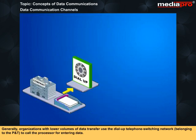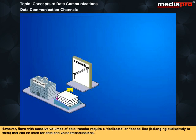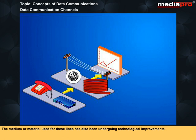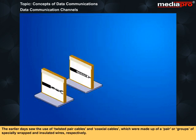Organizations with lower volumes of data transfer use the dial-up telephone switching network to call the processor for entering data. However, firms with massive volumes of data transfer require a dedicated or leased line belonging exclusively to them that can be used for data and voice transmissions. The medium used for these lines has also been undergoing technological improvements. Earlier days saw the use of twisted pair cables and coaxial cables, which were made of a pair or groups of specially wrapped and insulated wires respectively.